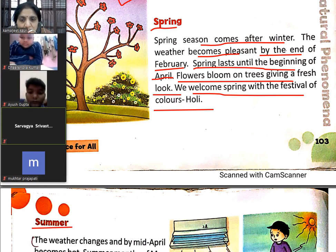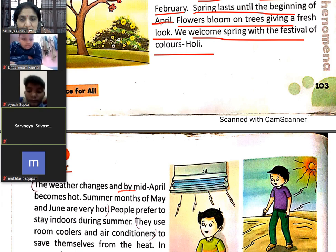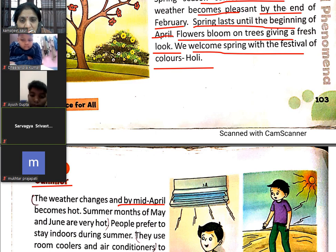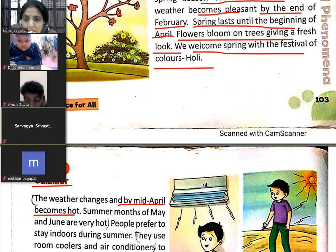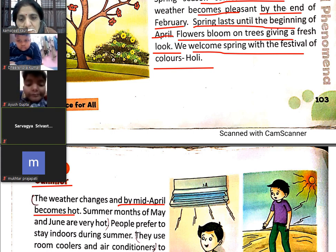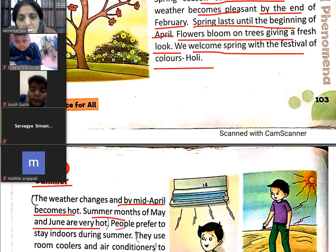The weather changes by mid-April — now it becomes hot. Summer months of May and June are very hot. People prefer to stay indoors during summer, playing indoor games.